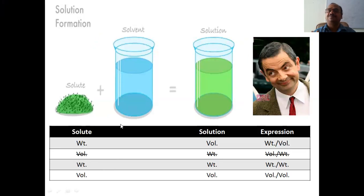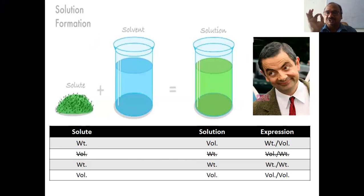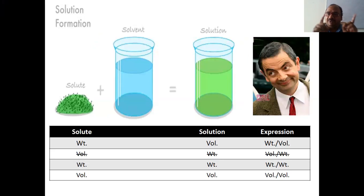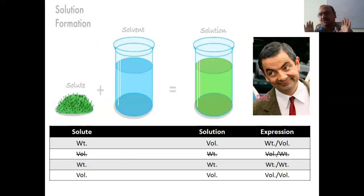So what we saw: weight of solute and volume of solution gives weight by volume expression. Volume by weight is NOT possible — please forget it. Weight by volume is possible, weight by weight is possible, and volume by volume is possible. That's it — three possibilities are there.